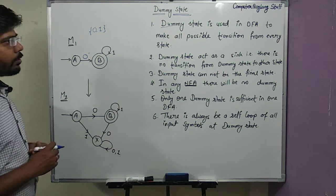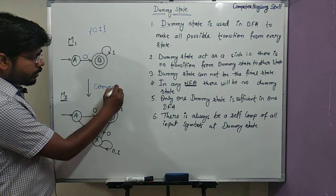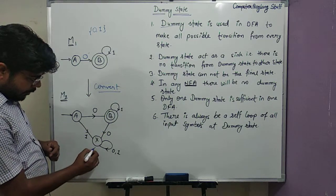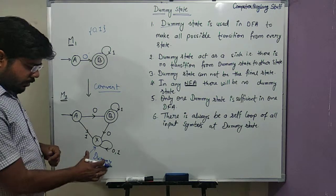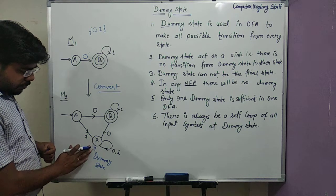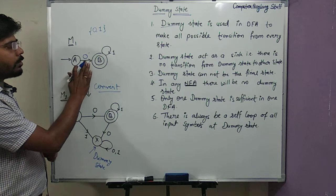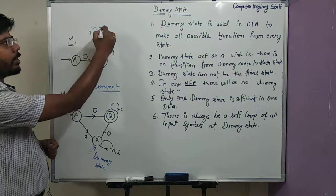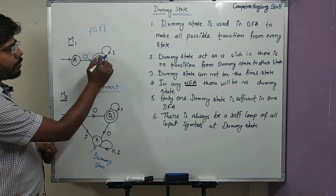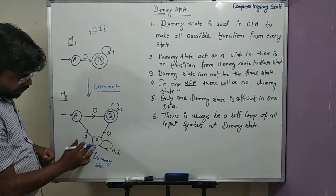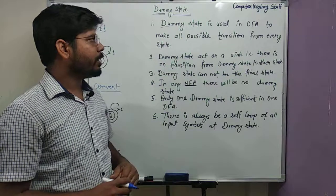To complete this DFA, first we need to create a dummy state. Let's call this dummy state X. Now, how do we add this dummy state to the existing machine? From state A, we already have a transition for symbol 0, but we do not have a transition for 1, so we create a transition for 1 from A to the dummy state X. And from state B, we do not have a transition for 0, so from B to the dummy state we add a 0 transition.